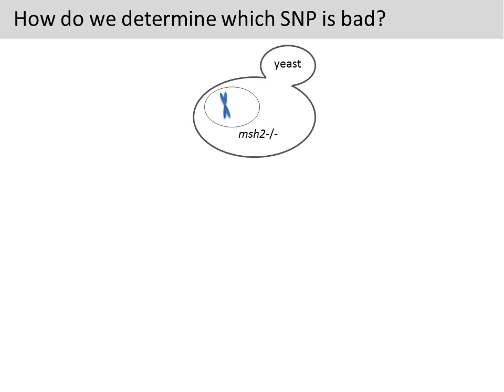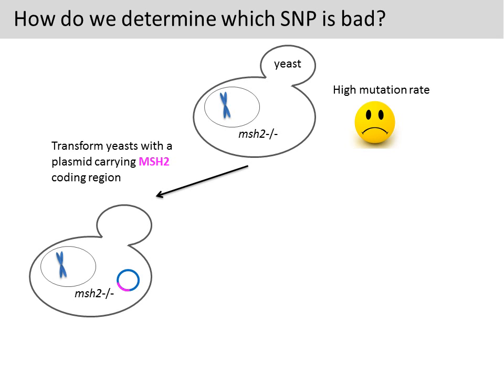In short, we start with a yeast strain that carries mutated MSH2. The mutant yeast won't be able to repair DNA mismatches. Therefore, the mutation rate in this strain is very high. We can next introduce a plasmid DNA carrying the wild-type MSH2 gene into the yeast. This is supposed to produce the functional MSH2 protein and reduce the mutation rate. The blue circle represents a plasmid that can replicate in yeast, and the purple segment in the circle represents the MSH2 coding region. This assay is called complementation or rescue.